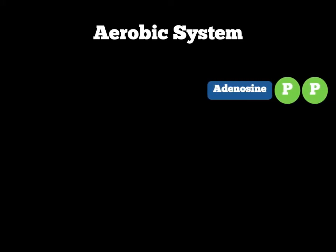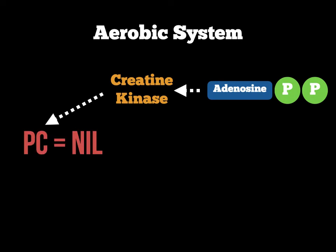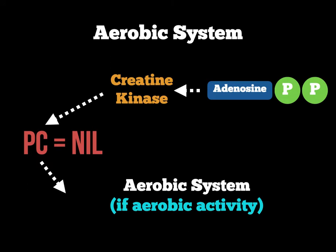Before the aerobic system starts, the body will always check — with any activity — to use the PC stores first, because they're an immediate source of energy. So regardless of whether we're standing up, jumping, or throwing, if there are high levels of ADP in the body, the body will stimulate creatine kinase to check if there are any PC stores. If we decide to go for a slow walk for over 10 seconds, there may be no PC stores left. At that point, because we're walking slowly — an aerobic activity — the body will switch to using the aerobic system to provide phosphates for the ATP resynthesis cycle.